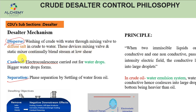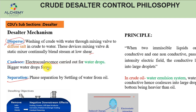The mixing valve and static mixer continuously blend the stream at lower shear. Then comes coalescence. In refineries the desalter we use is the electric desalter. Electro-coalescence is carried out on water droplets — once electro-coalescence occurs, small drops form into bigger drops.